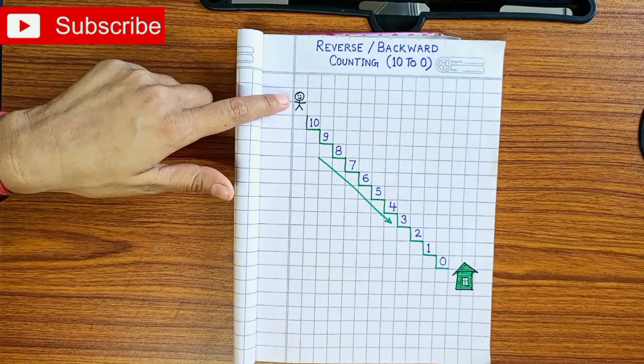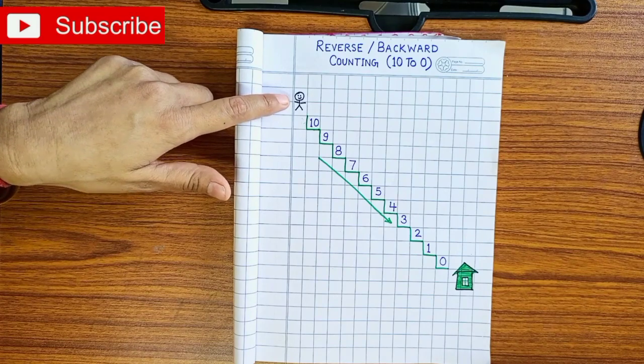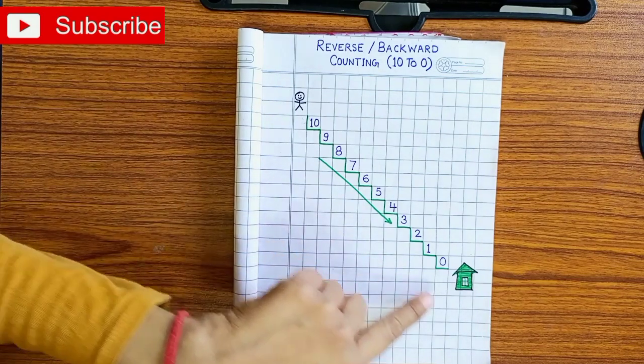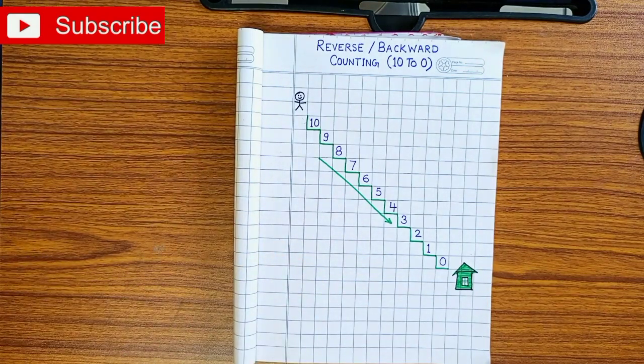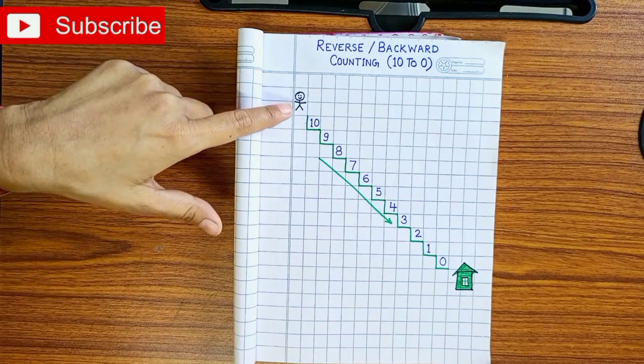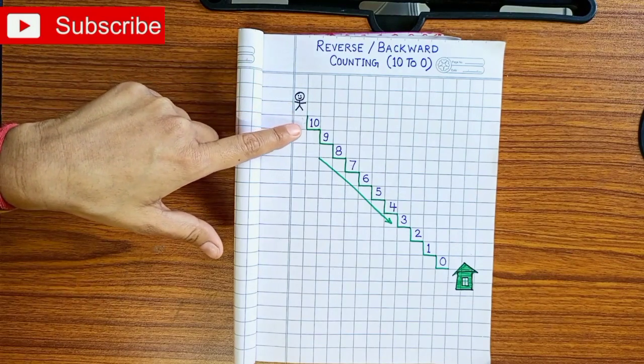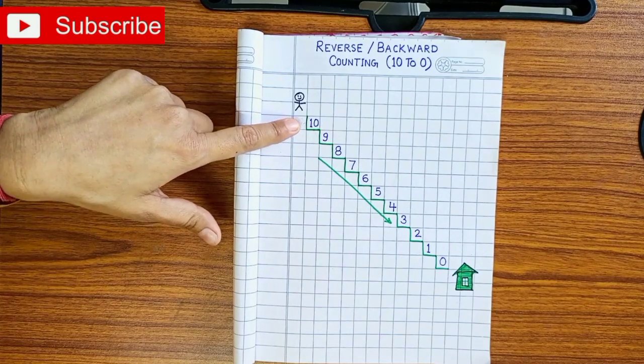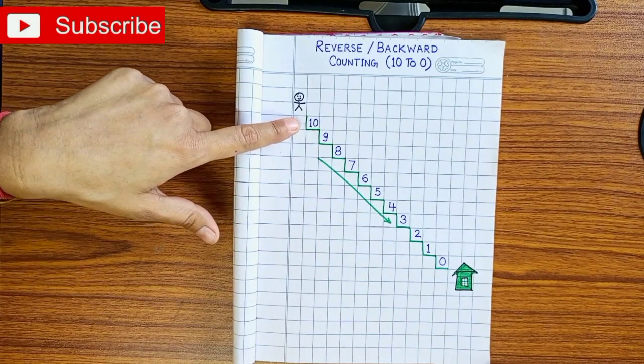Ara is standing near the 10 number stairs. Ara wants to go back to home. How you will go back to home, Ara? First, you have to come back on number 10.